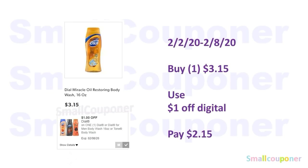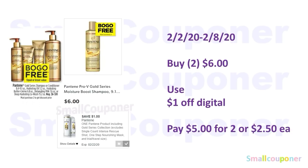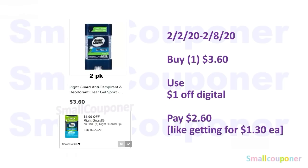The Dove Body Wash, the 16 ounces, is $3.15; use the $1 off digital and pay $2.15. During the clearance event, some stores may have it for even cheaper, so make sure to check prices at your store. The Pantene Gold Series is BOGO free this week — buy two Pantene Gold Shampoos at $6 each, and since they are BOGO free, you get two for $6. Use the $1 off digital and pay $5 for two, or $2.50 each. The Right Guard 2-pack is $3.60; use the $1 off digital and pay $2.60 — like getting $1.30 per deodorant.